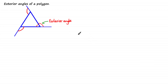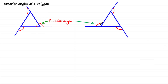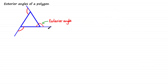When looking at exterior angles, it's important to look at them in one direction. As you can see, we're looking at the exterior angles in the anti-clockwise direction. You could also look at the exterior angles in the clockwise direction — those are also exterior angles of the same polygon.